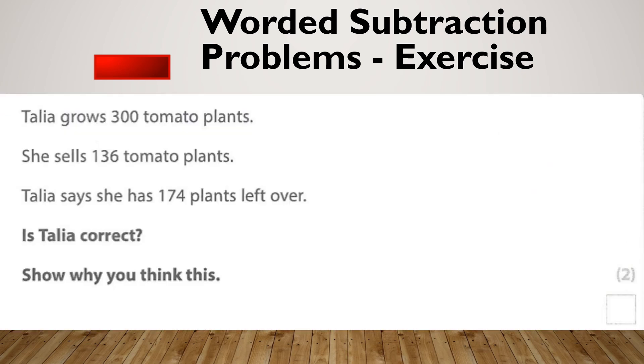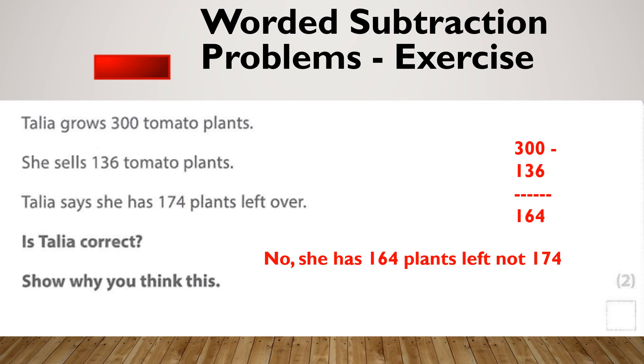Let's do another one. Talia grows 300 tomato plants. She sells 136 tomato plants. Talia says she has 174 plants left over. Is Talia correct? Now, a couple of things to note on this question. Firstly, I've got is Talia correct? So I'm going to need to answer that question with a yes or a no. On Edexcel Entry 3, you will have a tick box at the bottom of your sheet which actually says yes or no, and you need to tick that box when you're finished. We do get questions like this at Level 1 as well, and at Level 1 you don't get the tick box, so you need to remember to write your answer. Also, Talia says she has 174. This is what Talia thinks. You're going to do your calculation and compare your answer to Talia's. So pause the video and try this one, please. OK, let's see how you got on. Hopefully you got no, because Talia actually only has 164 plants left.